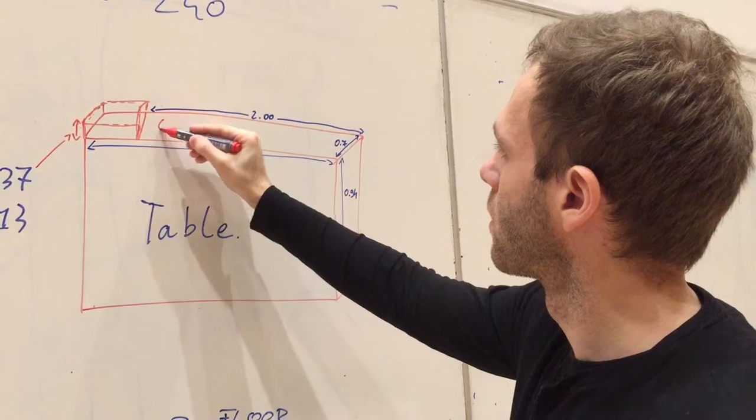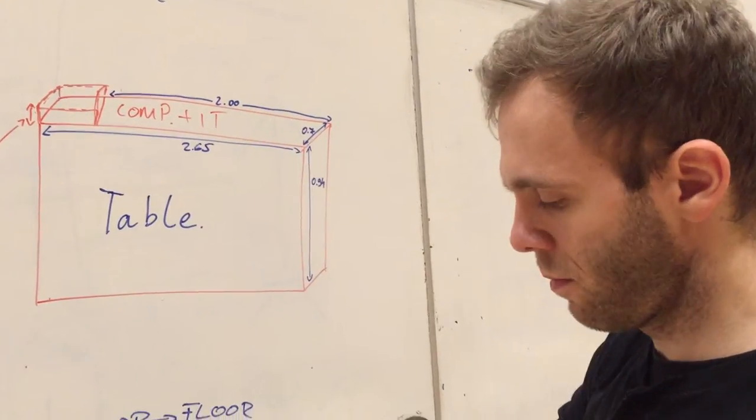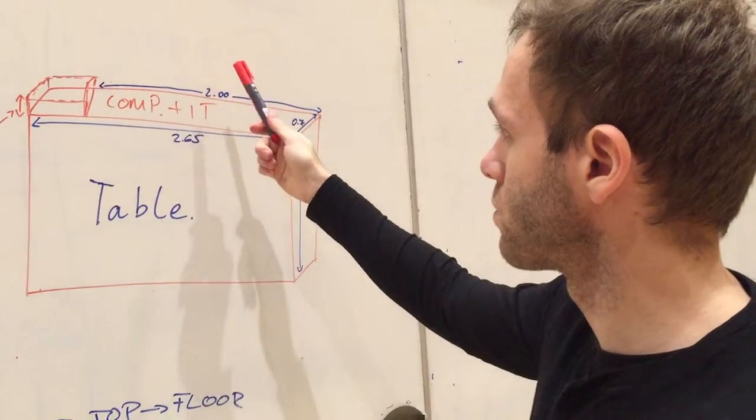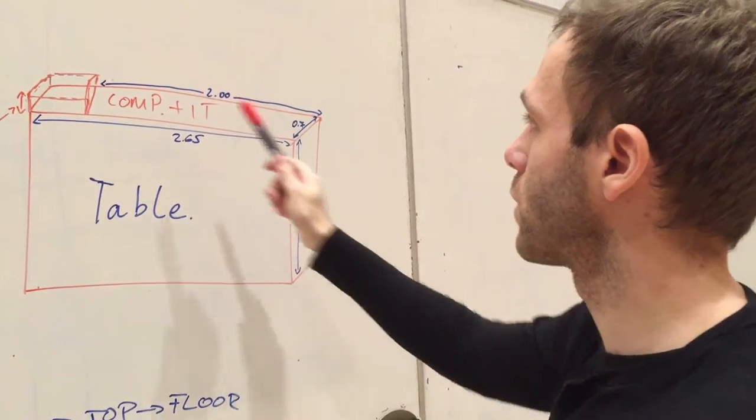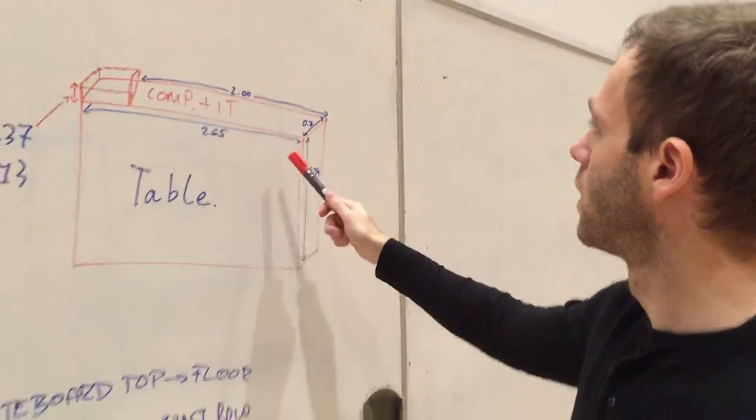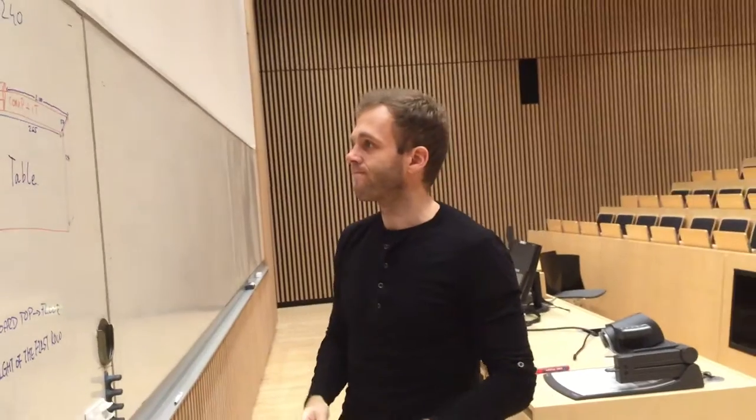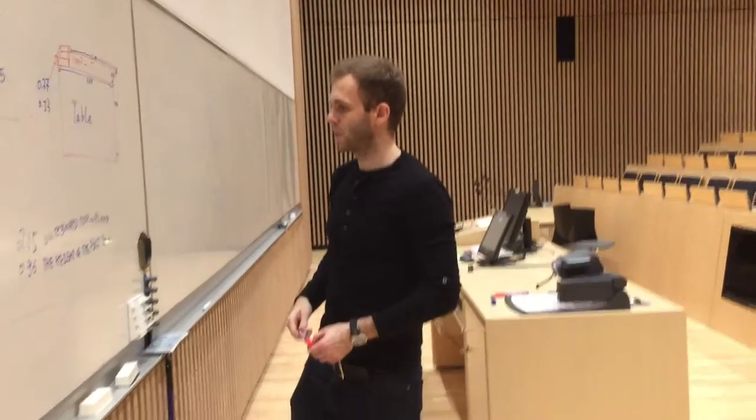Here are some computers and IT stuff, but I think we can just put them under the table so we can clear the whole surface here which is two meters, and we can put the TEDx letters here.